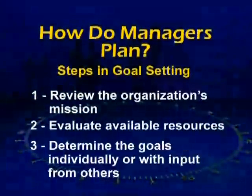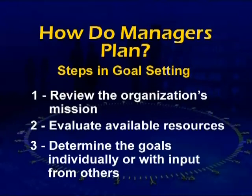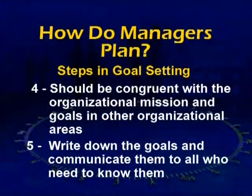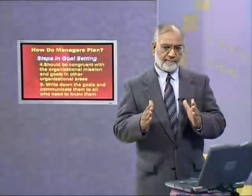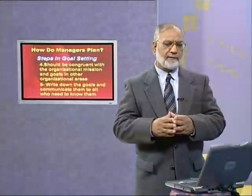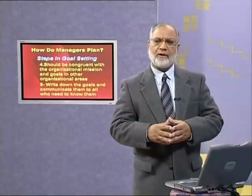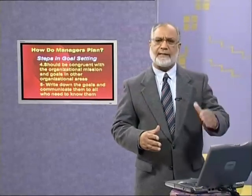Number three: you determine the goals individually or with input from others — the choice is yours. In formal planning, either the top manager or head of department sets them alone, or you involve all people — operators, workers, skilled and semi-skilled staff. It will take time, but believe me, when everyone's commitment and ownership is included, results will be better. Number four: the goals should be congruent with the organizational mission — there must be alignment. You cannot have the organization's mission going one way while goals are specified in a completely different direction, such as an organization in the textile sector specifying electricity production goals, or a paper products organization discussing chemicals.